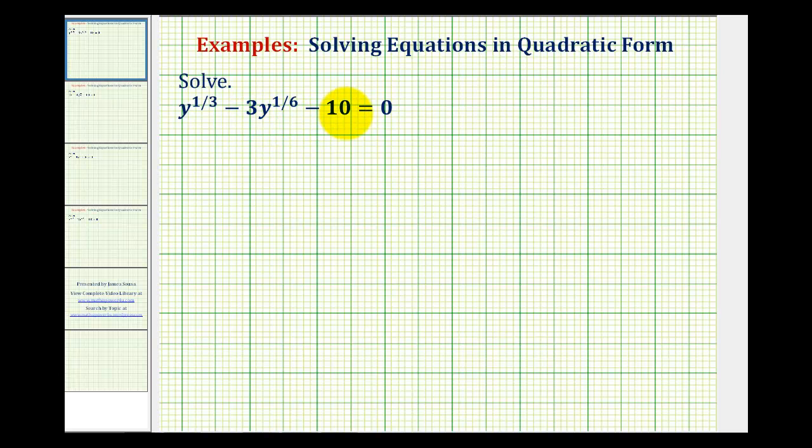For this equation, quadratic form would be u squared minus three u minus 10 equals zero. Notice in quadratic form, if we square the variable factor of this term, it's equal to the variable factors of the first term.